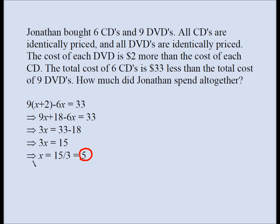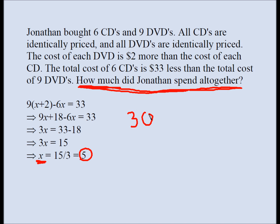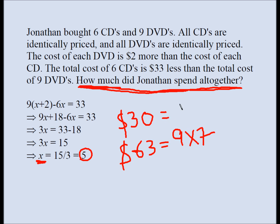We are almost done. The question is asking how much money did he spend altogether? He bought 6 CDs at $5 each: 6 times 5 is $30. A DVD was $2 more than a CD, so 5 plus 2 is $7 per DVD. He bought 9 DVDs, and 9 times 7 is $63. When you add them up — 30 plus 63 — you get $93. That's the total amount he spent. That's your answer.